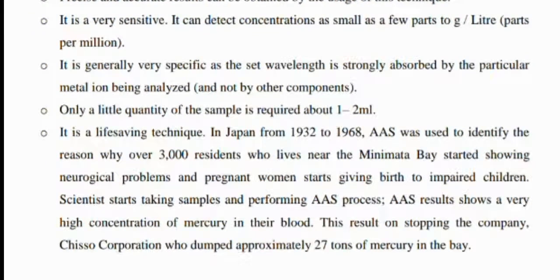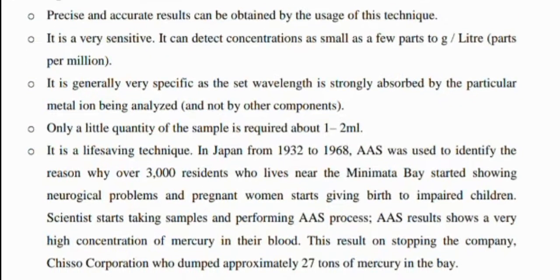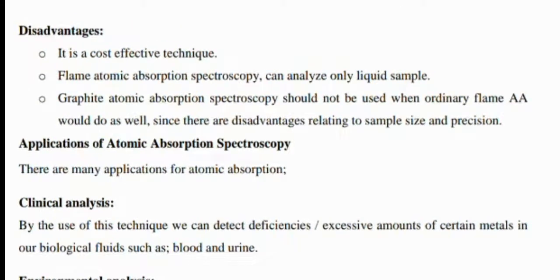It is a life-saving technique. In Japan, from 1932 to 1968, atomic absorption spectroscopy was used to identify the reason why over 3,000 residents living near Minamata Bay started showing neurological problems and women began giving birth to impaired children. Scientists took samples and performed atomic absorption analysis, and results showed a very high concentration of mercury in their blood. This led to stopping the company Chisso Corporation, who had dumped approximately 27 tons of mercury into the bay.